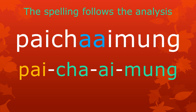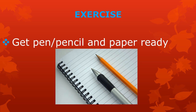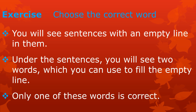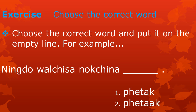Now, let's do an exercise to see if you can put theory into practice. Please get a pen or pencil and a piece of paper ready. Exercise: Choose the correct word. You will see sentences with an empty line in them. Under the sentence, you will see two words which you can use to fill the empty line. Only one of these words is correct. Choose the correct word and put it on the empty line. For example, you see a sentence with a blank line.